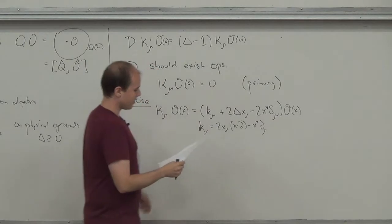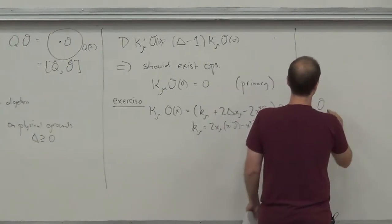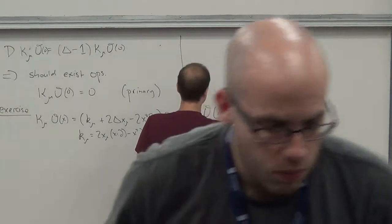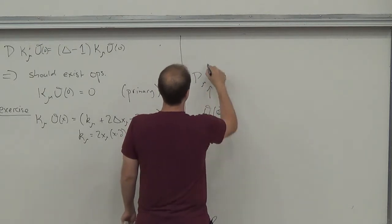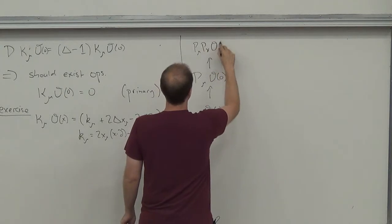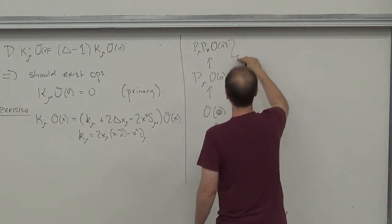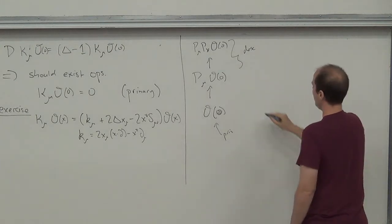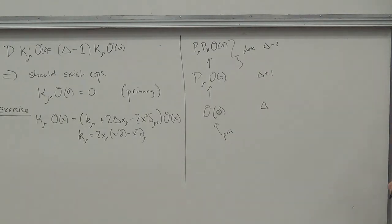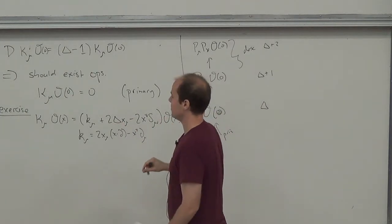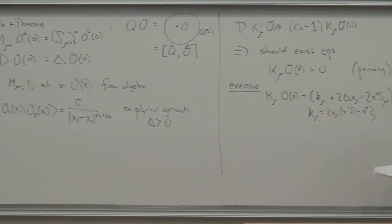We have primary operators, and we can build other operators from them. Starting with a primary O_0, we can act with momentum generators to get additional operators called descendants. If O has dimension delta, then the descendants have dimension delta+1, delta+2, and so on. The conformal algebra acts on all of these states. Once we have the primary condition, we can compute using the conformal algebra how all the generators act on all possible states.